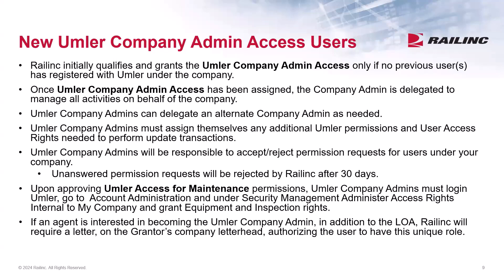When approving Umler access for maintenance permissions, admins must then log into Umler, go to account administration, and then under security management, choose administer access rights internal to my company, and grant the equipment and inspection rights. We will review this process later in the presentation. If an agent is interested in becoming the Umler company admin, in addition to the letter of authorization, Railinc will require a letter on the grantor's company letterhead authorizing the specific users to have the company admin role.